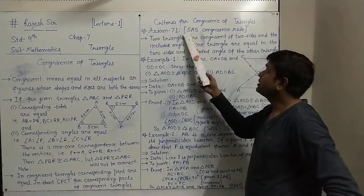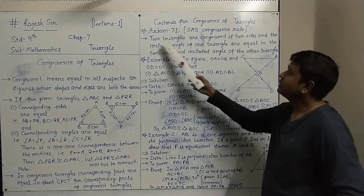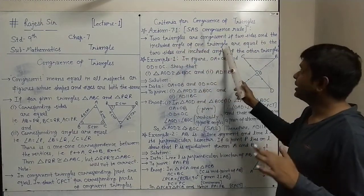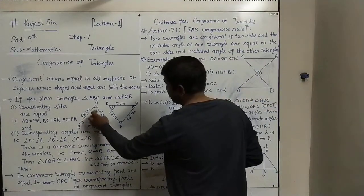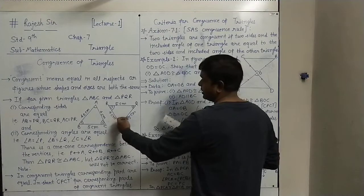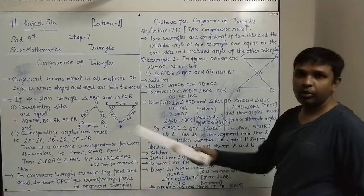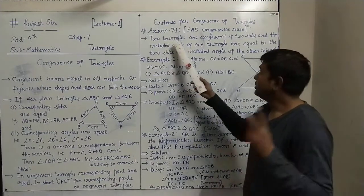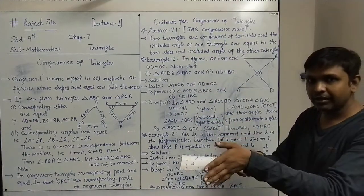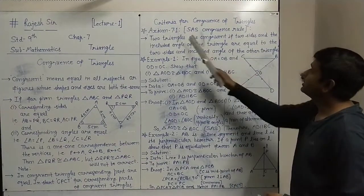SAS stands for Side-Angle-Side. The SAS congruence rule states: two triangles are congruent if two sides and the included angle of one triangle are equal to the two sides and the included angle of the other triangle. The included angle means the angle between the two sides. If two sides and the included angle of one triangle are equal to the corresponding two sides and included angle of the second triangle, then both triangles are called congruent.